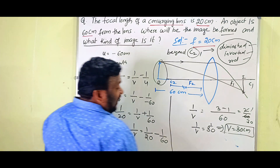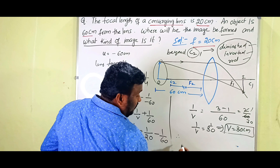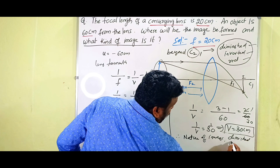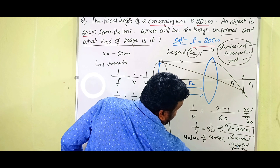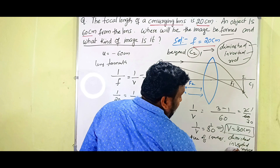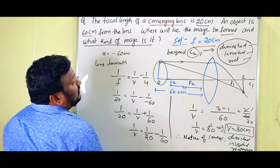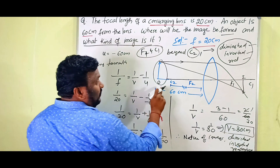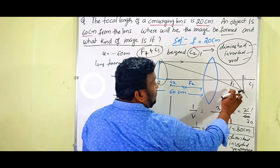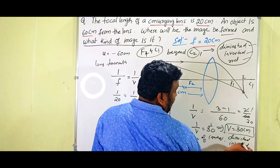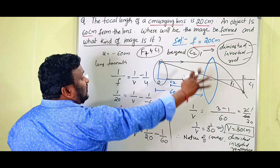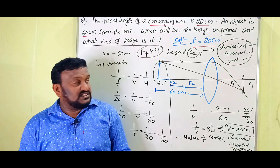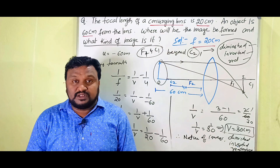The nature of the image is: real, inverted, and diminished. When the object is beyond the center of curvature, the image is formed between the focus f1 and center of curvature c1, and it is a real, inverted, and diminished image. This solution will be asked for four marks in the public examination, so copy the notes and prepare for the exam.